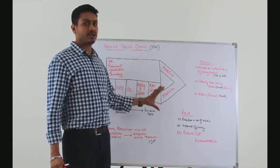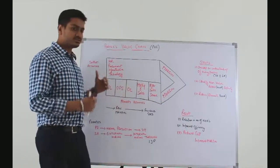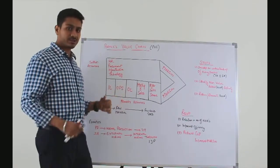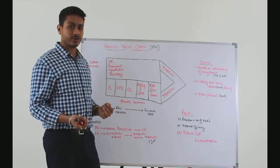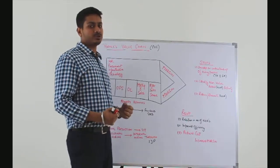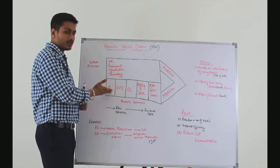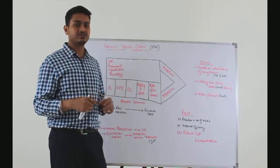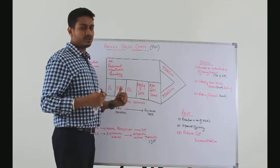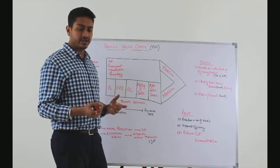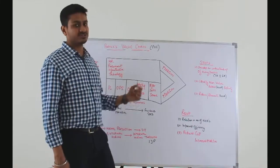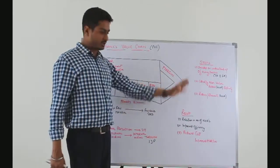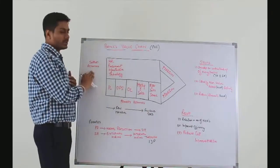Every step in the primary activity has certain sub-steps. It may be possible that each of these sub-steps may be required or may not be required. The idea behind using the Porter's Value Chain is to develop an understanding of the sub-steps within each of these processes and validate whether they are required or not. If they are not required, we eliminate or reduce them, which makes our processes simpler and helps improve cost.